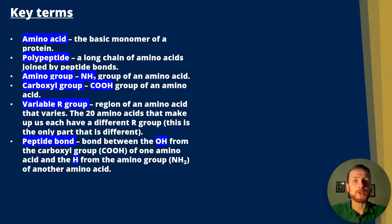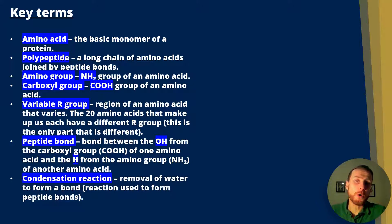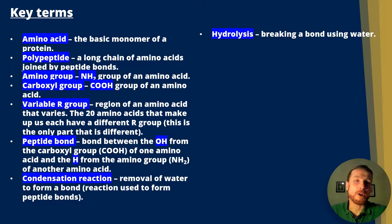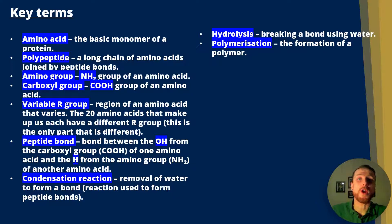A peptide bond is a bond formed between two amino acids. It's where the OH from the carboxyl group of one amino acid and the hydrogen from the amino NH2 group of another amino acid join. A condensation reaction is the removal of water to form a bond, and this is the reaction used to form peptide bonds. Hydrolysis is breaking a bond using water. Polymerization is the formation of a polymer from monomers.